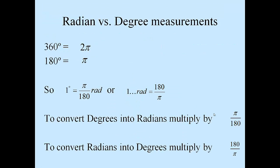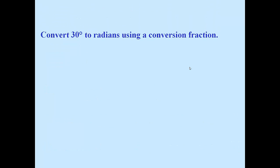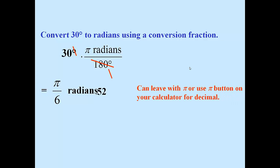Radians versus degrees: a circle contains 2π radians, and also 360 degrees. So if we cut that in half, 180 degrees equals π radians. Therefore, one degree is equal to π over 180 radians, and one radian is 180 divided by π. To convert degrees into radians, multiply by π over 180. To convert radians into degrees, multiply by 180 divided by π. For example, 30 degrees times π over 180 gives you π over 6 radians — we can leave the π in and call it π/6 radians.